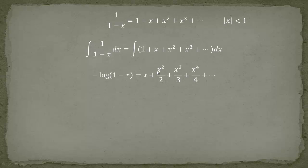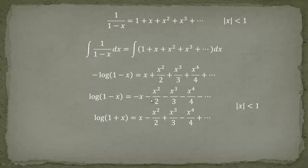An important note: we would normally get an integration constant, but you can check that it equals 0 by plugging in X = 0, so I'll leave it out. Then we multiply both sides by minus 1, bringing the minus sign across, giving us the first series written with alternating minus signs — or equivalently, minus of (X plus X squared over 2 plus X cubed over 3 and so forth).